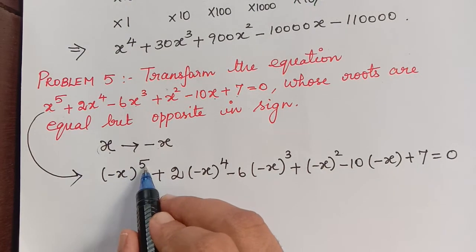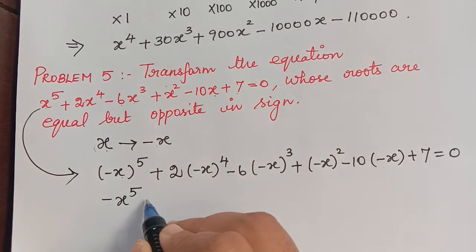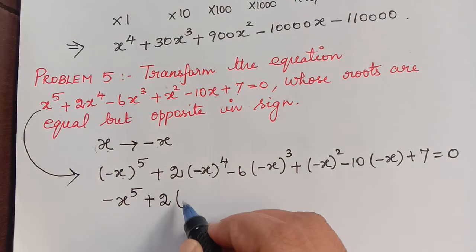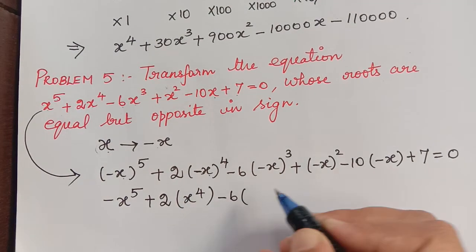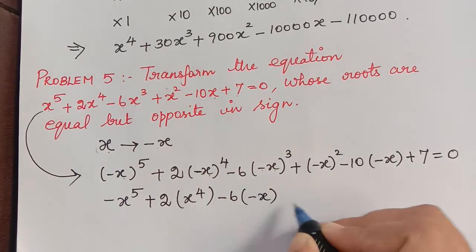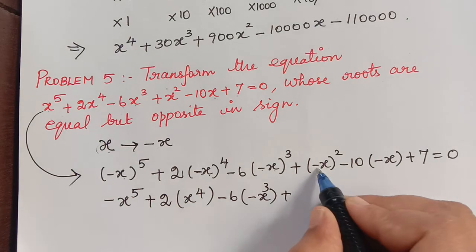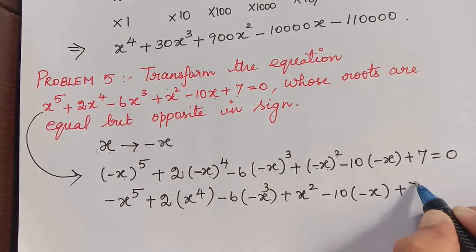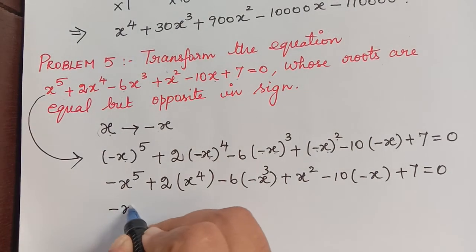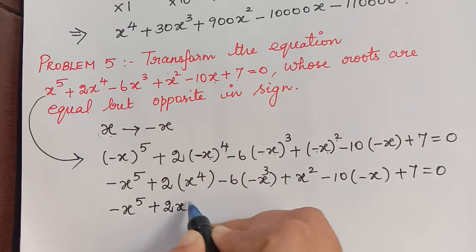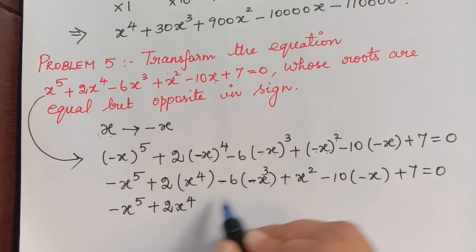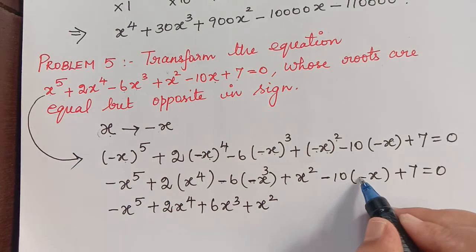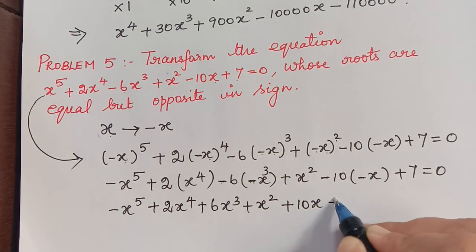Substituting −x into x⁵ + 2x⁴ − 6x³ + x² − 10x + 7 = 0: (−x)⁵ = −x⁵; 2(−x)⁴ = +2x⁴; −6(−x)³ = −(−6x³) so that gives −6 × (−1) = +6, wait — (−x)³ = −x³ so −6(−x³) = +6x³. Then (−x)² = x²; −10(−x) = +10x; and +7 stays. After multiplying out, we get −x⁵ + 2x⁴ + 6x³ + x² + 10x + 7 = 0.